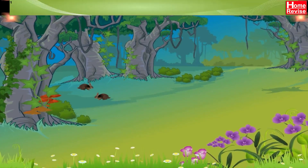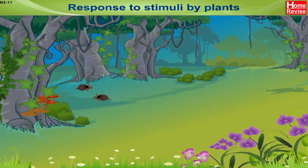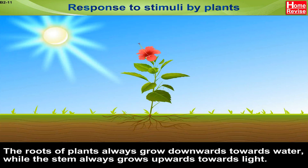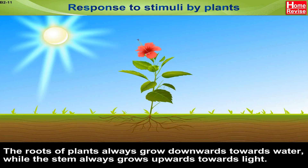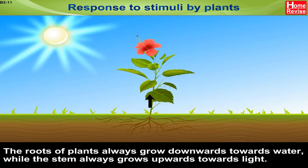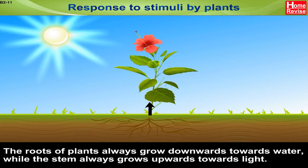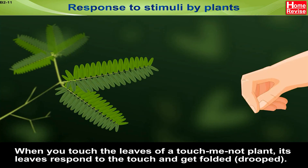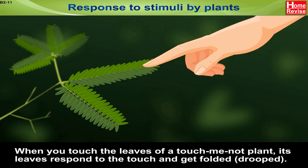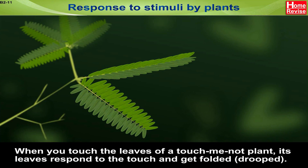Response to stimuli by plants: the roots of plants always grow downwards towards water while the stem always grows upwards towards light. When you touch the leaves of a touch-me-not plant, its leaves respond to the touch and get folded or drooped.